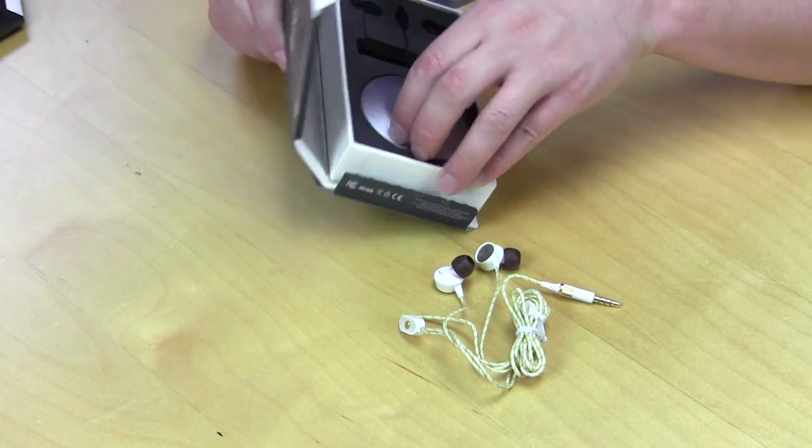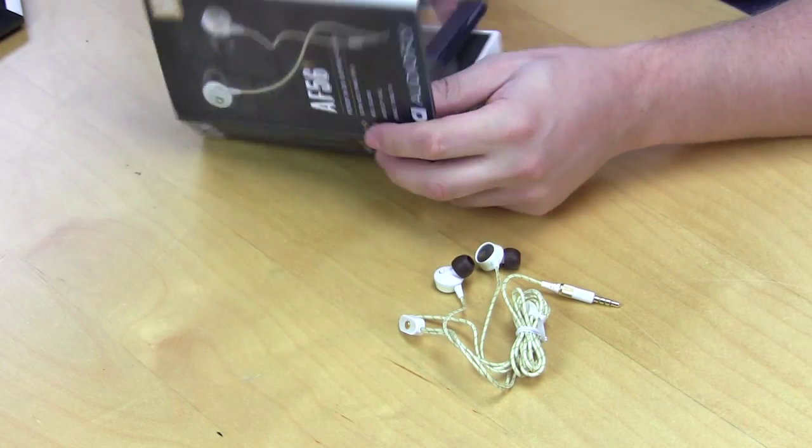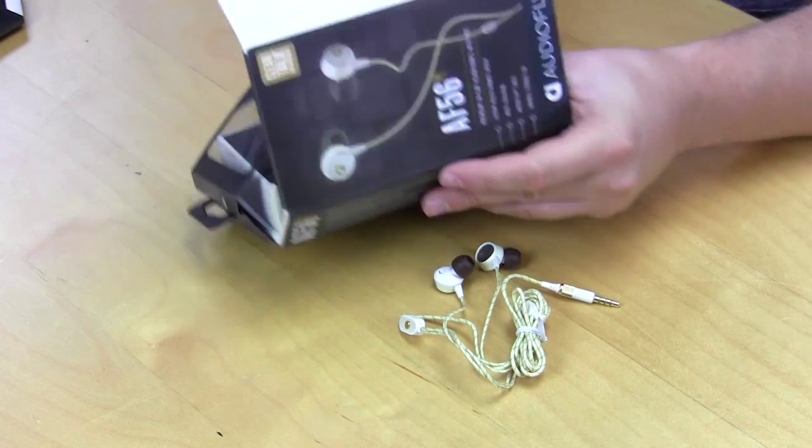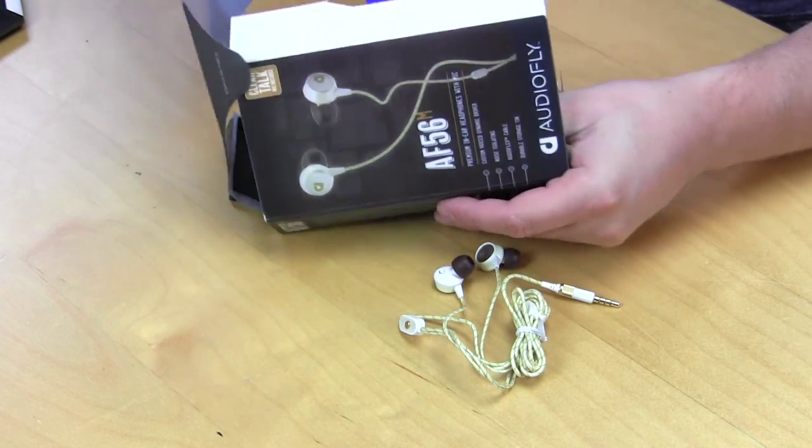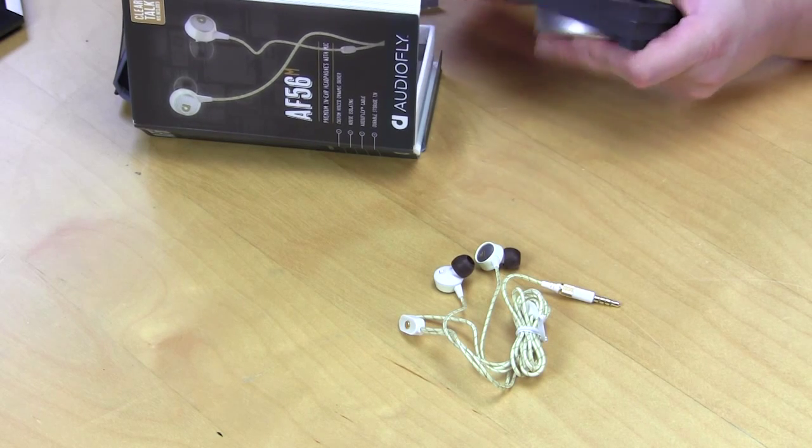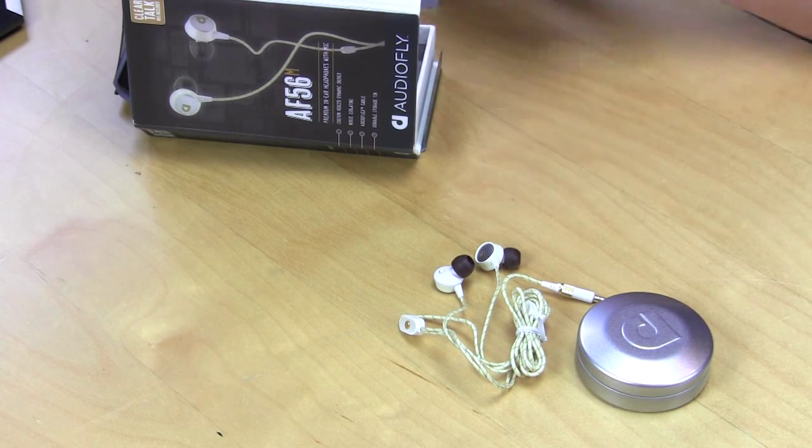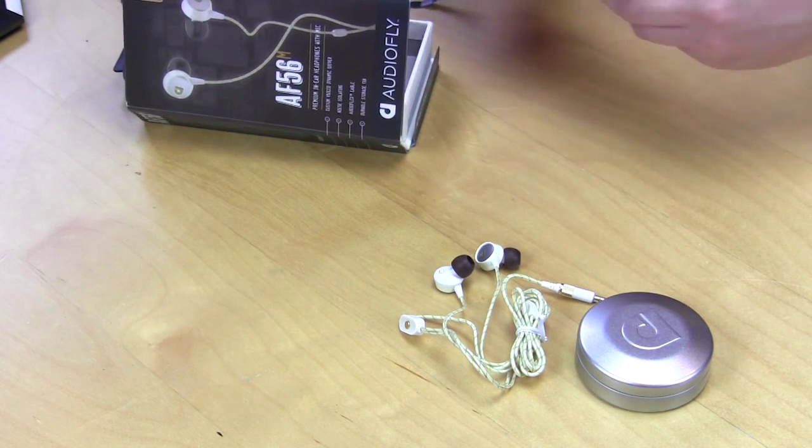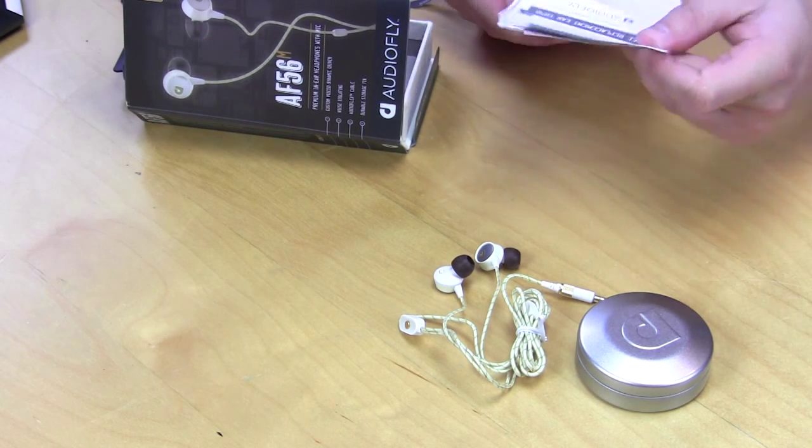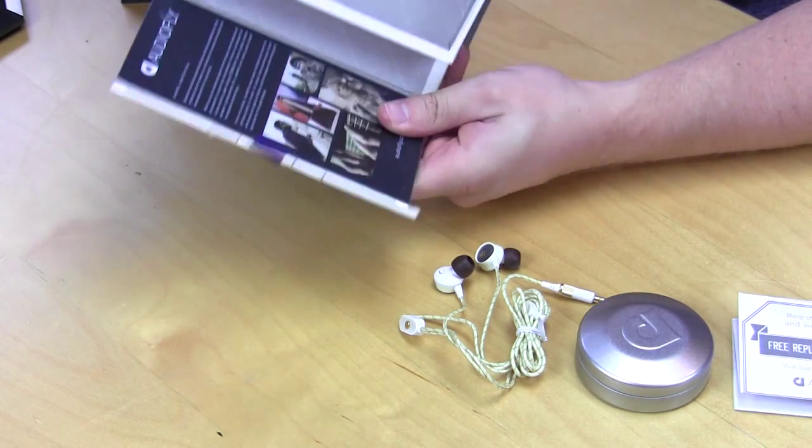And then under here we have the storage tin. Same thing that we saw in the AF78. We have the storage tin and I believe that's it. Free replacement ear tips and this is just our user's guide.